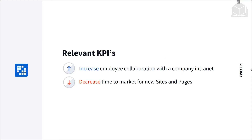Livingston also wants a public website to attract customers with targeted content and to create an engaging user experience. Livingston's key performance indicators are, first, to facilitate more employee collaboration in a secure online environment, and second, to make it easy for new sites, pages, and content to be published and to go live.